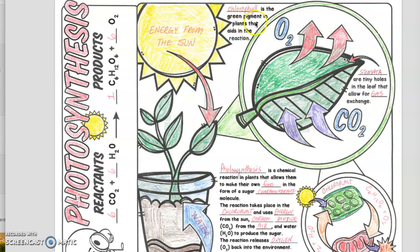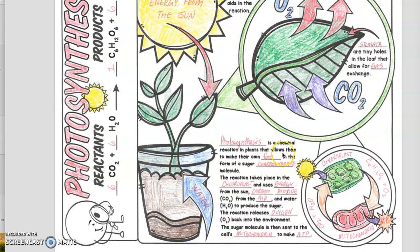Chlorophyll is the green pigment in the plant that aids in the reaction. Photosynthesis is the chemical reaction that takes place and allows them to make food, which is a form of sugar or carbohydrate.